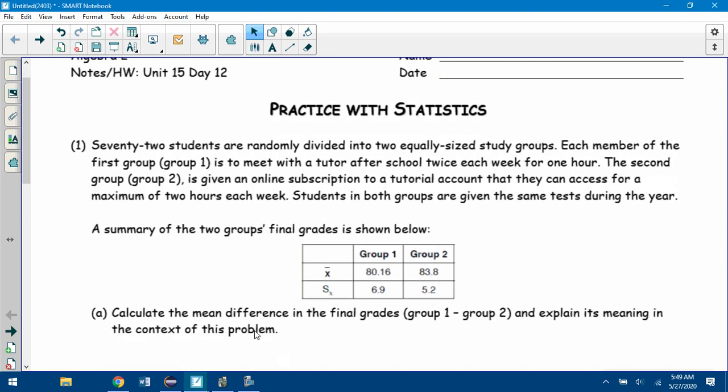These are all Regents-type questions, and they're kind of multi-part questions that usually would be like four pointers on the Regents, but questions that you should be able to answer based off of what we've done. Number one says 72 students are randomly divided into two equally sized study groups. Each member of the first group is to meet with a tutor after school twice each week for one hour. The second group is given an online subscription to a tutorial account that they can access for a maximum of two hours each week. Students in both groups are given the same tests during the year. A summary of the two groups' final grades is shown below.